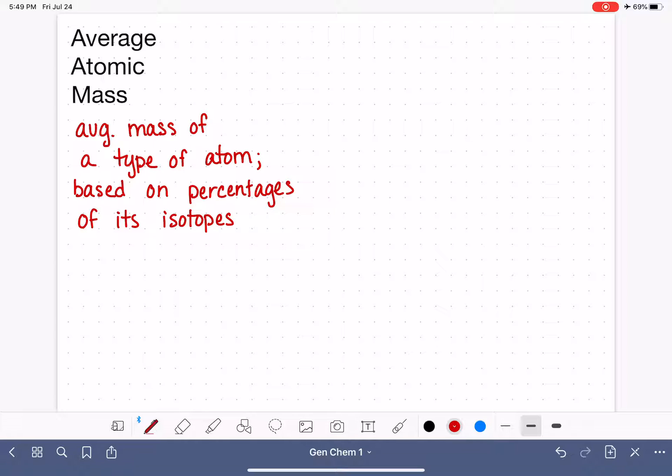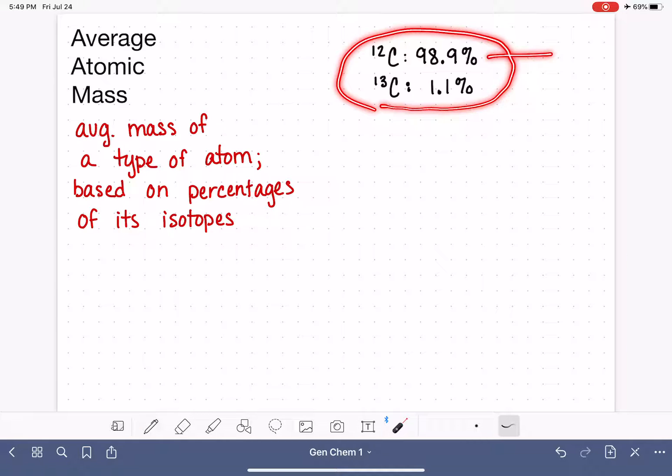All of the different isotopes of an atom are present in the world in very specific percentages. So, for example, let's use carbon as an example. We know that 98.9% of all the carbon exists as the carbon-12 isotope, and 1.1% of the carbon exists as carbon-13 isotope. And these are fixed percentages. So the average mass of a carbon atom is calculated based on these relative abundances of these two isotopes.